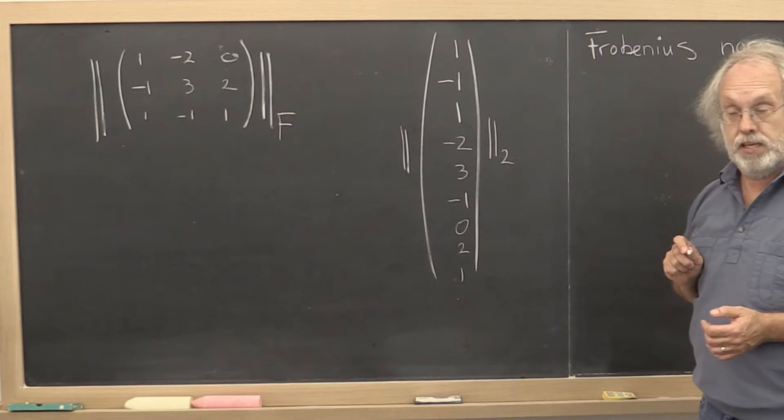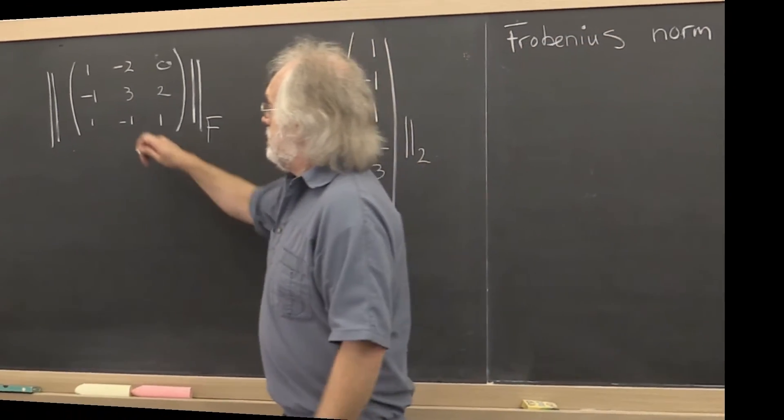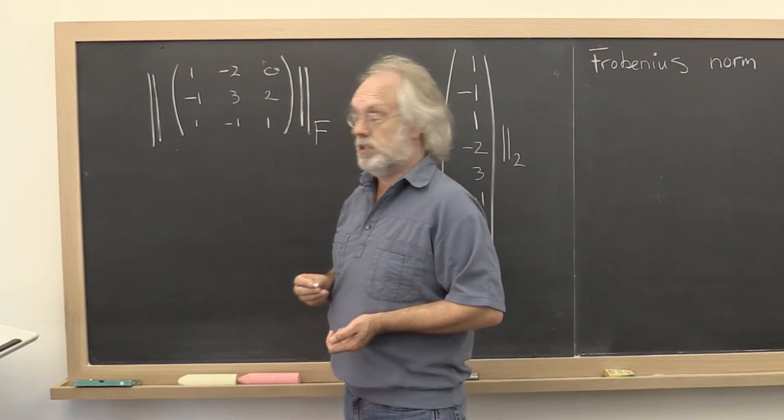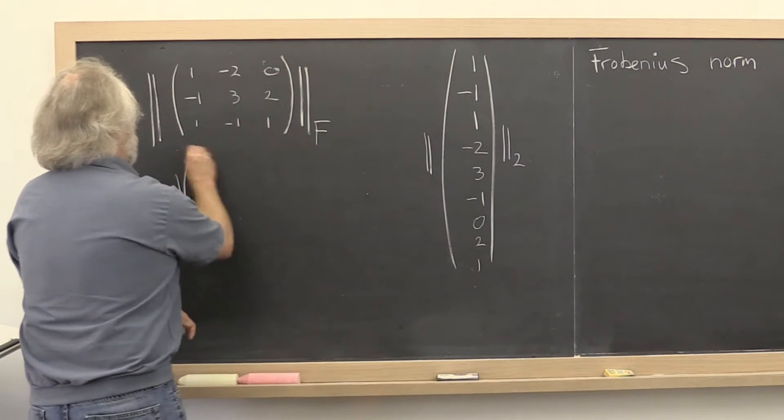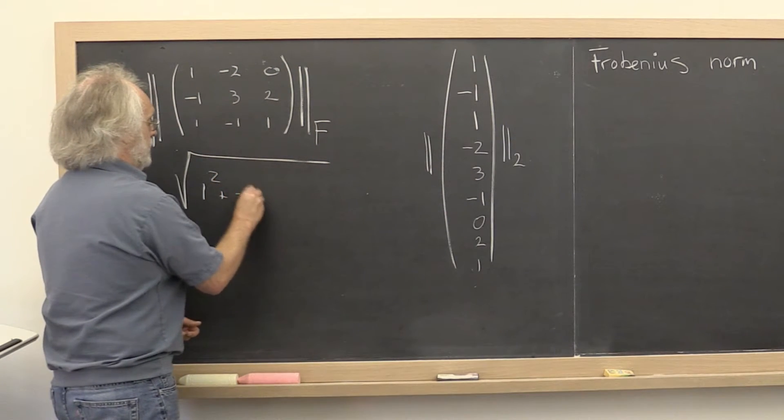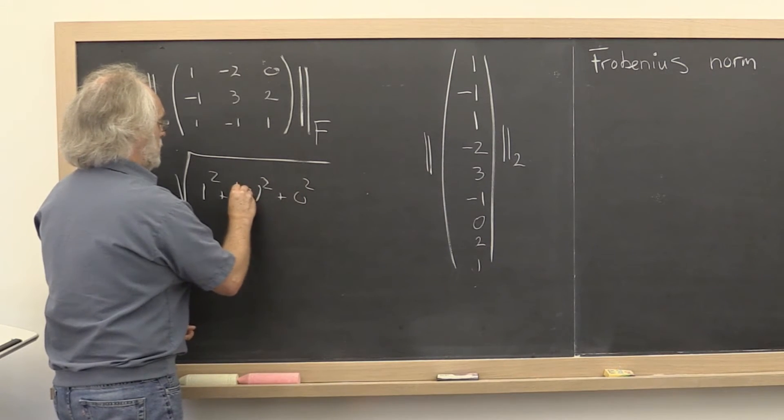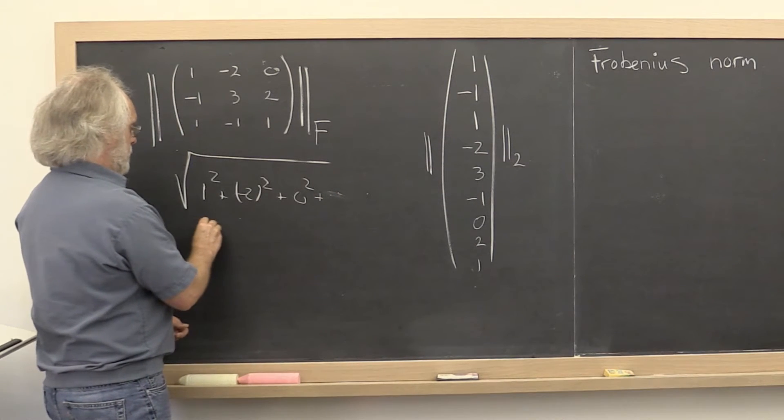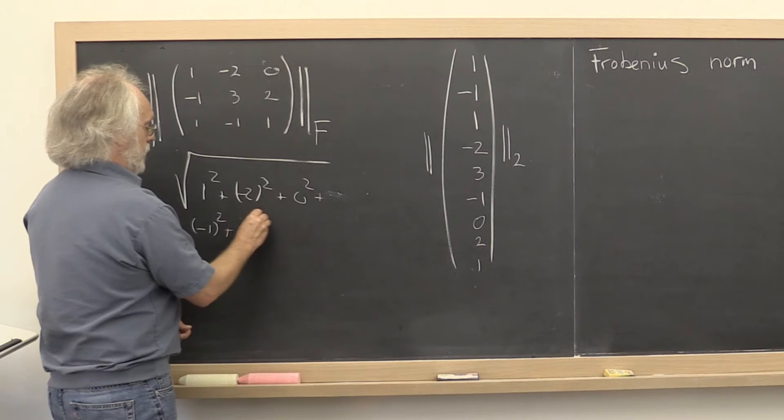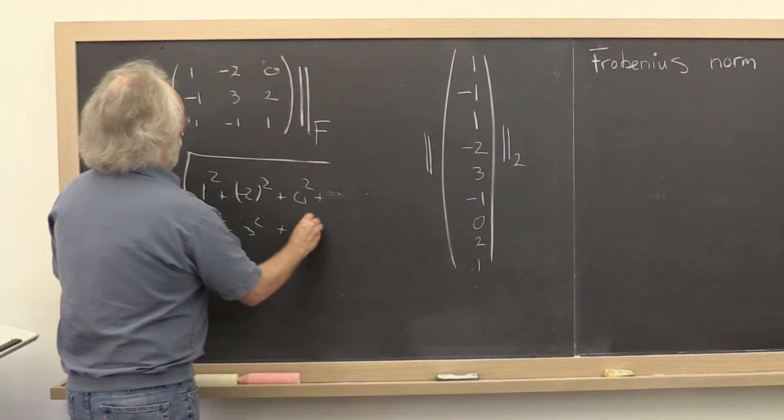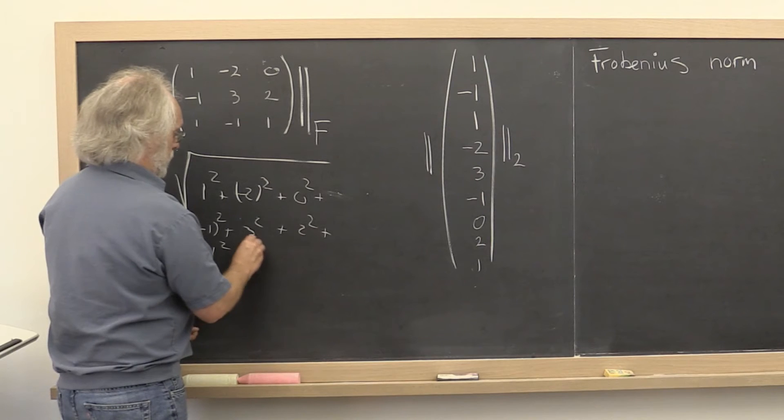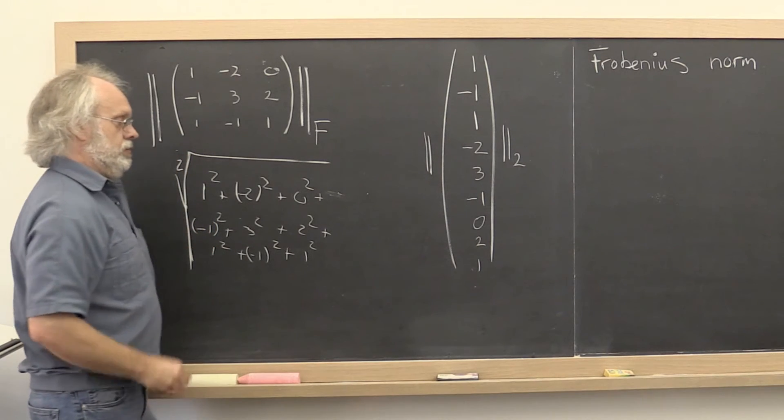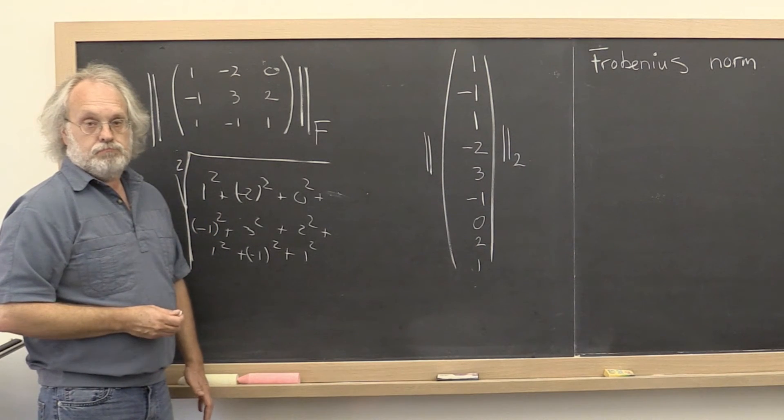And what is it? It's just the sum of the squares of the absolute values and then you take the square root of that. So it's the square root of one squared plus minus two squared plus zero squared plus minus one squared. Well, you might even want to put it over here. Minus one squared plus three squared plus two squared plus one squared plus minus one squared plus one squared. Square root. Very simple.